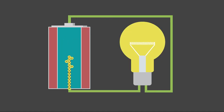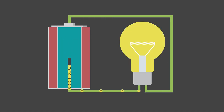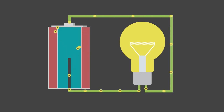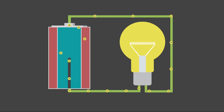When that connection is made, ions in both containers rush towards the anode and cathode connections in their respective containers. This allows extra electrons at the anode to rush along the wire to the cathode to balance the two charges, which powers the device in between.